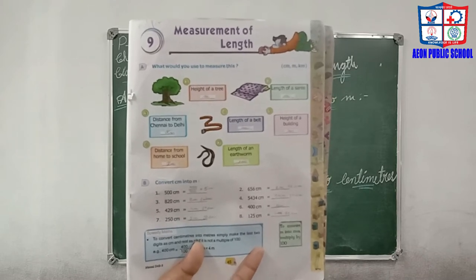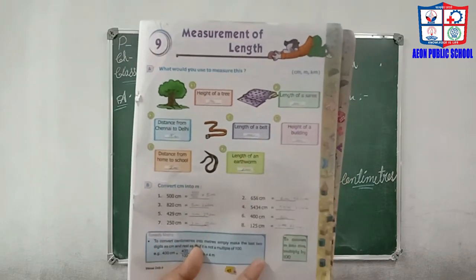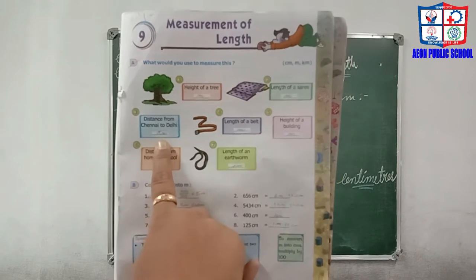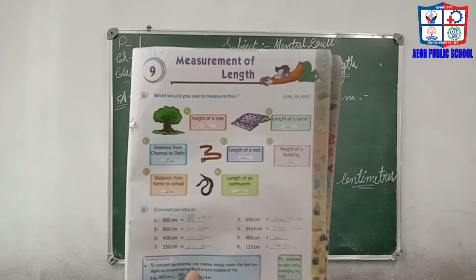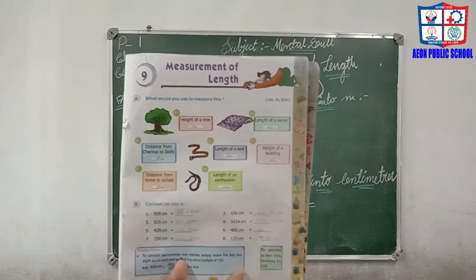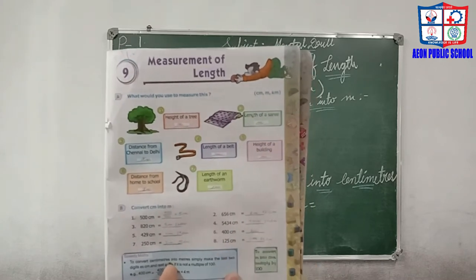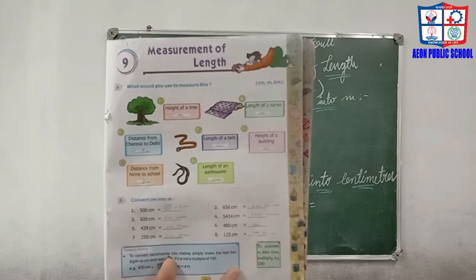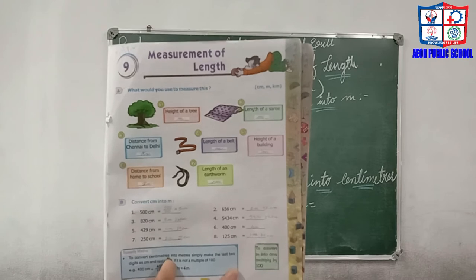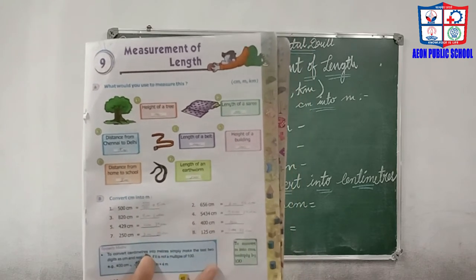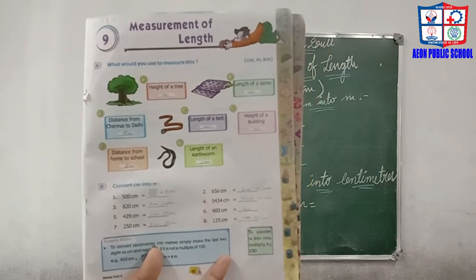Next is the length of a sari — that is in meters. Then, distance from Chennai to Delhi: since it is a long distance, we measure it in kilometers. Length of a bed is also in meters. Height of a building is also a long distance, so meters. Distance from home to school is kilometers. And length of an earthworm — it is small, so we measure it in centimeters.